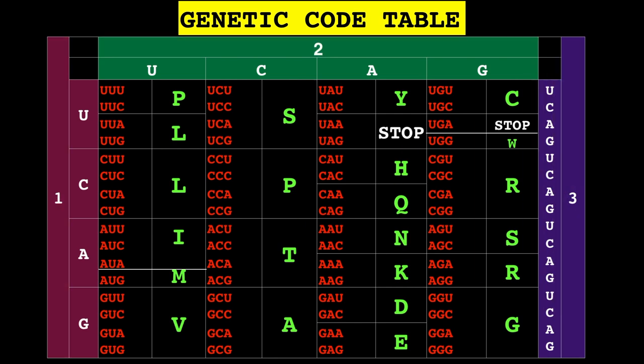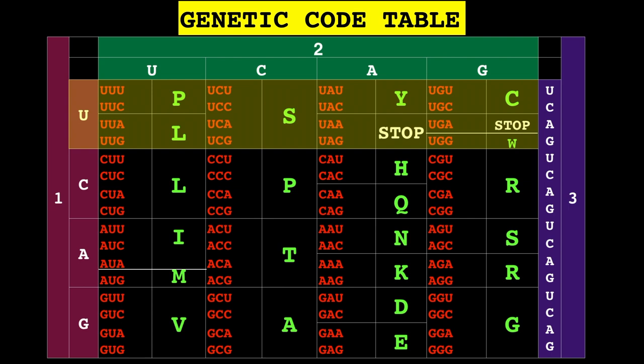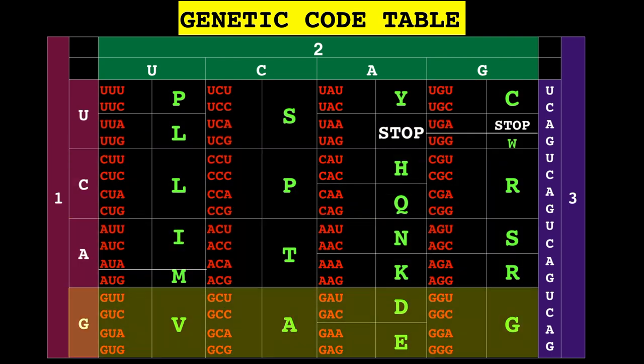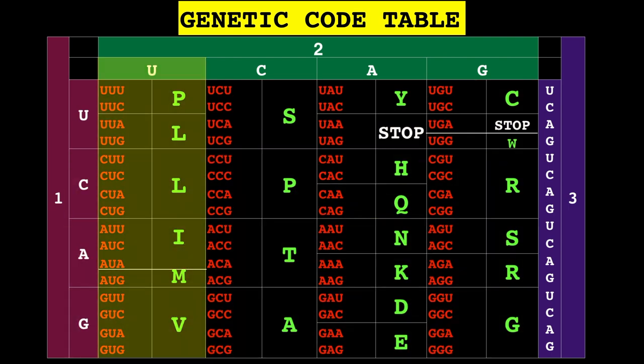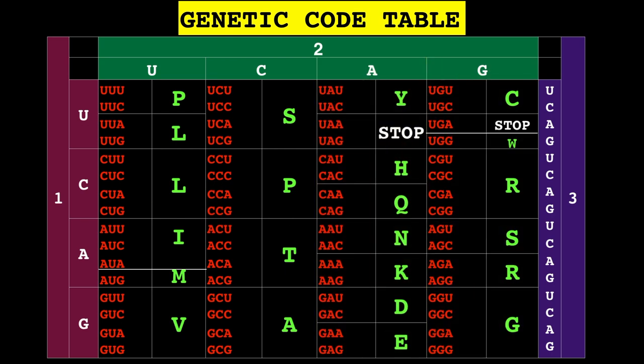We can find the first nucleotide in one of these four rows, then we can look for the second nucleotide in these four columns, and then it's easy to spot the third one.